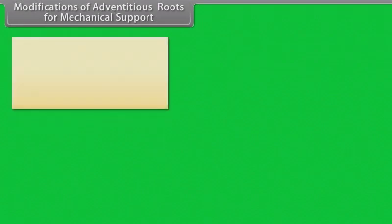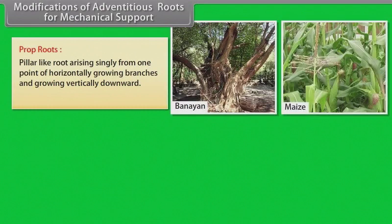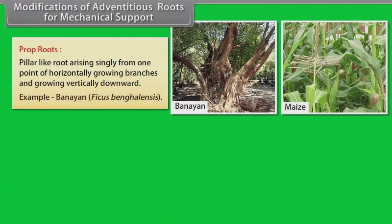Modifications of adventitious roots for mechanical support. Prop roots — pillar-like roots arising singly from one point of horizontally growing branches and growing vertically downward. Example: banyan.